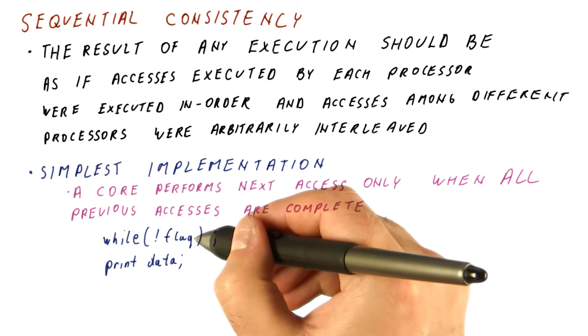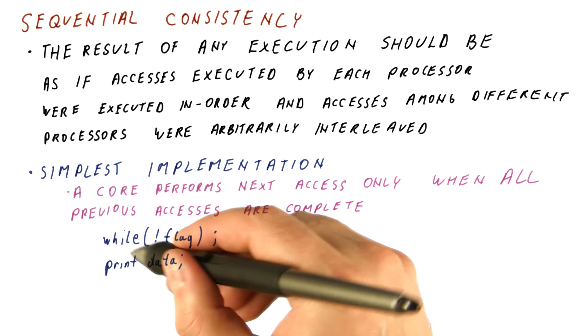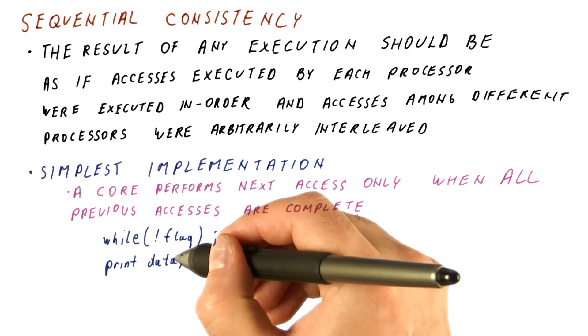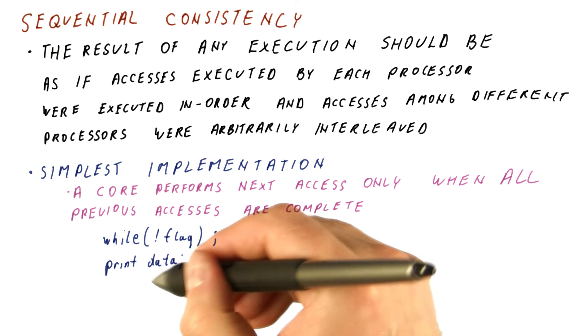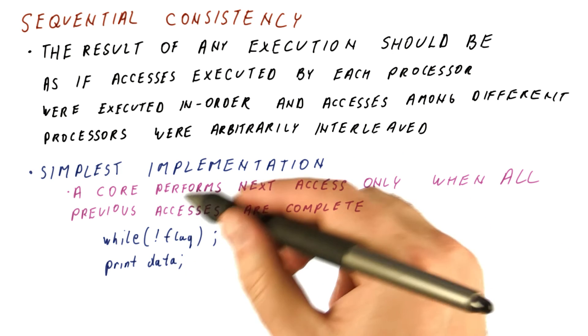Or if we read zero here, then we would correct the misprediction and go back to waiting here. So either way you cannot print wrong data anymore under sequential consistency here.